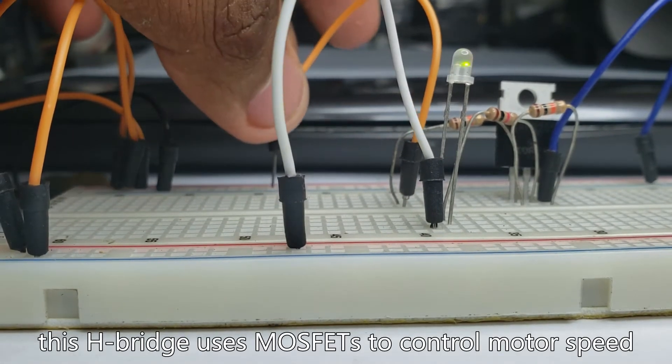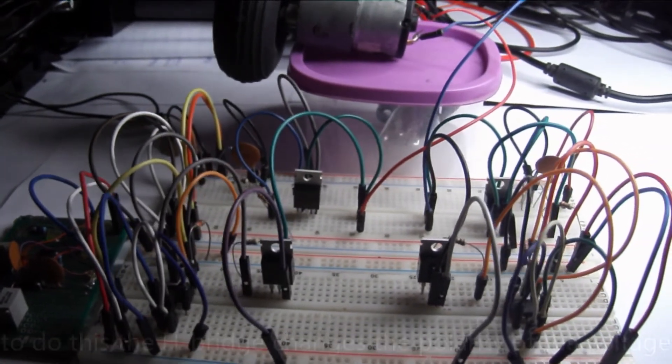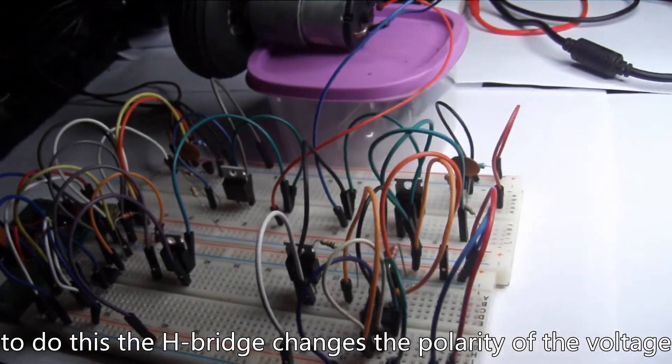This H-bridge uses MOSFETs to control motor speed and the side to which the motor rotates. To do this, the H-bridge changes the polarity of the voltage applied to the winding coil.